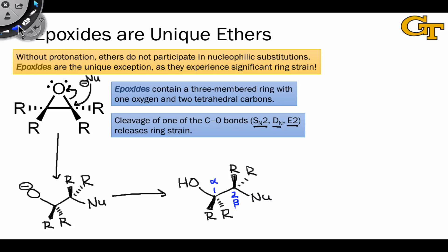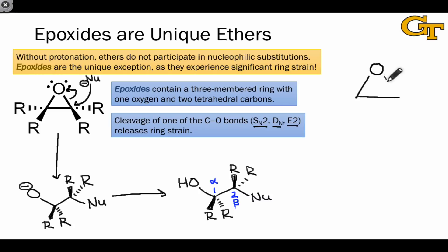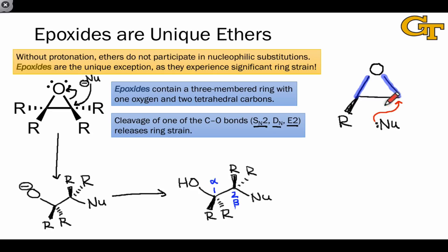The example shown here is a perfectly symmetric substrate, but in general epoxides will have different substituents linked to their two carbons, and this introduces an issue of what's called site selectivity. Epoxides consist of two electrophilic carbons — both carbons linked to the oxygen — since cleavage of either one of these bonds would lead to the alleviation of ring strain. A nucleophile that approaches an epoxide has a choice: does it attack the less substituted position, or the more substituted position?